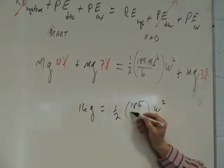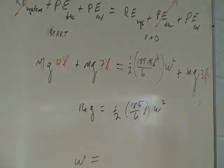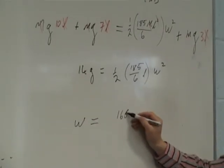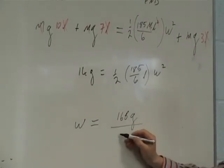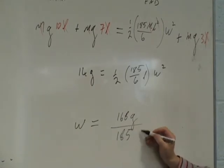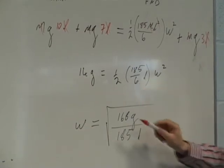And I'm not going to spend too much time on this. As a result, somewhere along the line I get omega equals the square root of 168G over 185L.